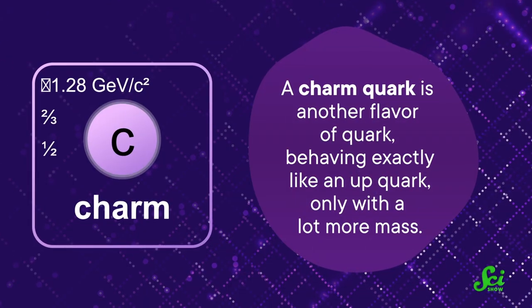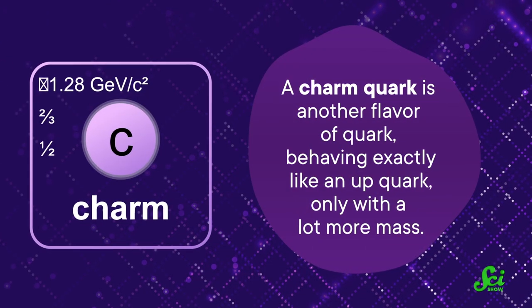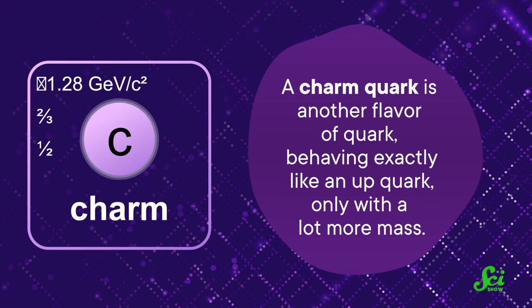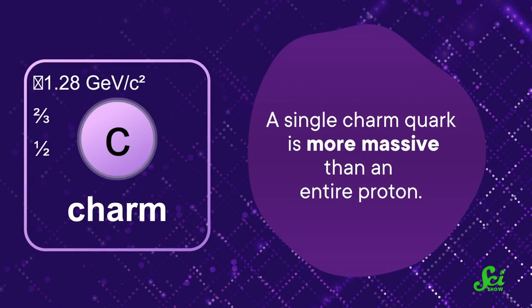A charm quark is another flavor of quark, behaving exactly like an up-quark, only with a lot more mass. And a single charm quark is more massive than an entire proton. So yeah, the idea of protons being built from them sounds a little bizarre. But it's physically plausible because of another strange rule.